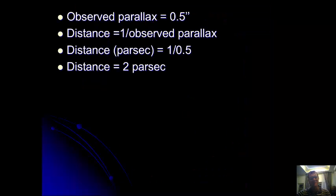That means the observed parallax is 0.5. Distance equals 1 divided by the observed parallax. So that gives me a distance in parsec. So the distance to this star is 2 parsec.